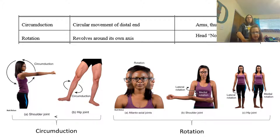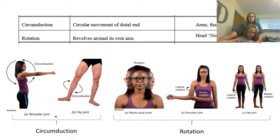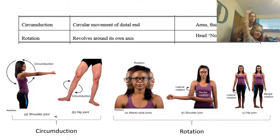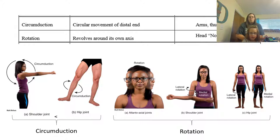The next one we have is what we call circumduction. Circumduction is where we can actually do a circle movement. You're going to come all the way around in a circle with your arm — that's circumduction, going all the way around. You can also do that with your thumb, where you can go around, and the leg can do it as well.